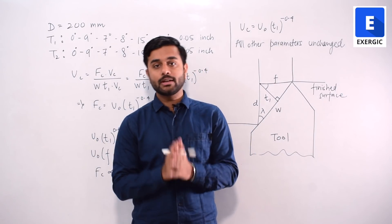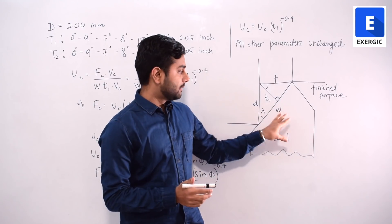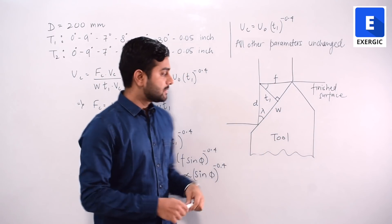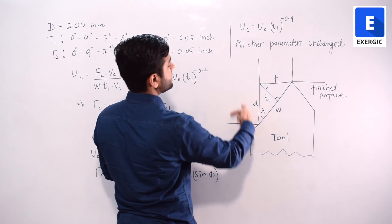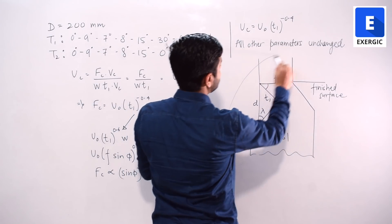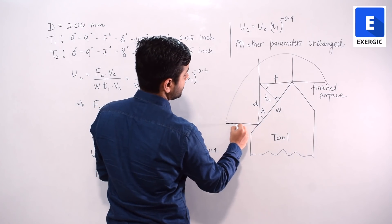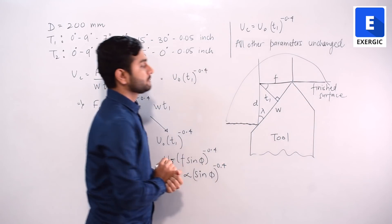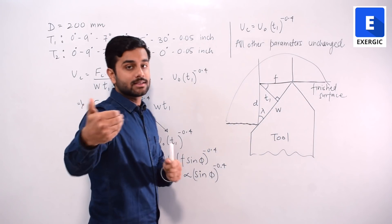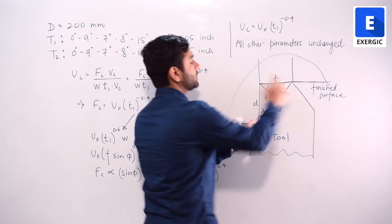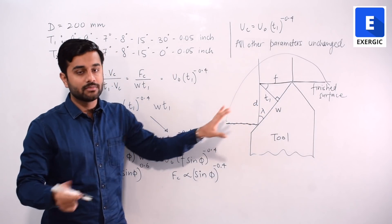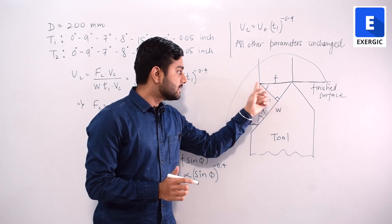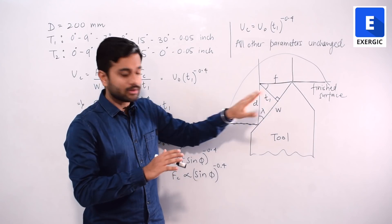To solve turning questions, a key diagram must be fully understood. The tool performs turning on the cylindrical surface — the unfinished surface becomes the finished surface. Feed is shown here, depth of cut is the perpendicular distance from finished to unfinished surface, and this feed here is the true feed, referred to as T1 in the question.